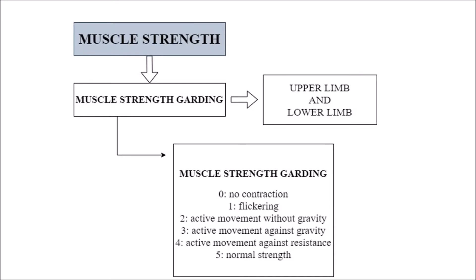Next is muscle strength. Muscle strength assessment begins with the upper limb then moves to the lower limb, covering shoulder, elbow, wrist, and fingers, then hip, knee, and ankle. For example, starting from the shoulder — if we perform shoulder flexion, it is performed by the pectoralis major. Ask the patient to perform the shoulder flexion while giving resistance at the same time to check the muscle strength.